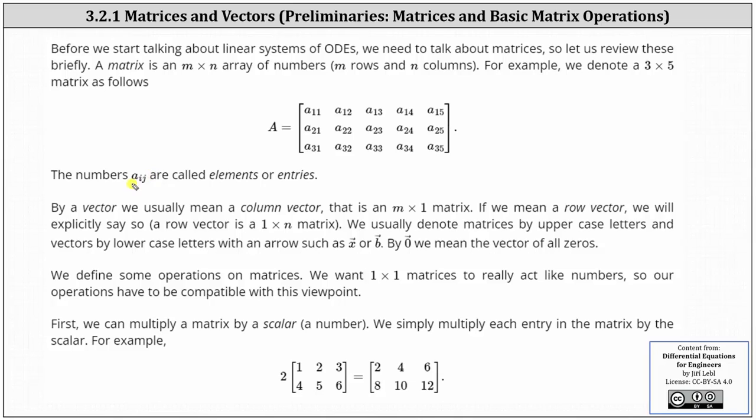The numbers a_ij are called elements or entries, where i is the row and j is the column of the entry or element. For example, the element A_13 is the element in row one, column three.